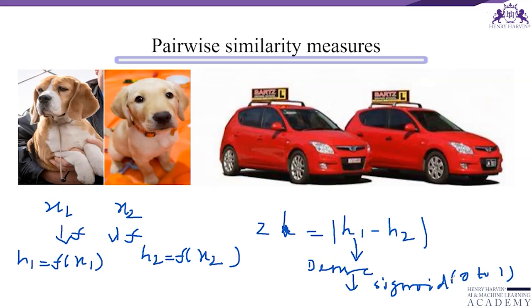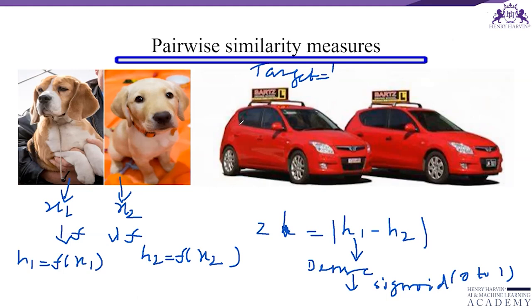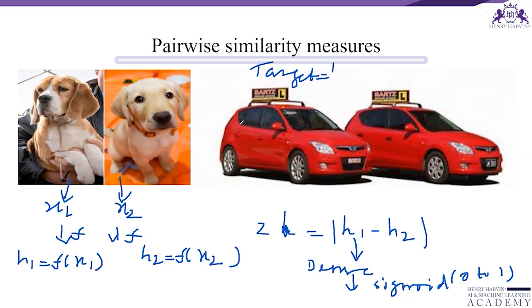By looking at the neural network structure, we can easily understand why the network is called a Siamese network — because the Siamese twins are connected to each other. The target will be 1 when the images are similar. We set the target and the scalar output by the network should be close to the target 1. We use a loss function — such as cross entropy — to measure the difference between the target and the predicted scalar. Using backpropagation, we calculate the gradient and perform gradient descent to update the model parameters.